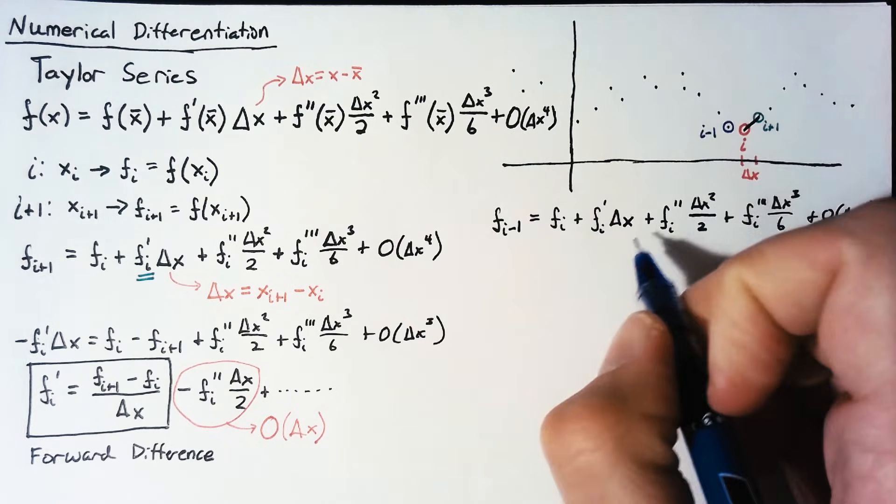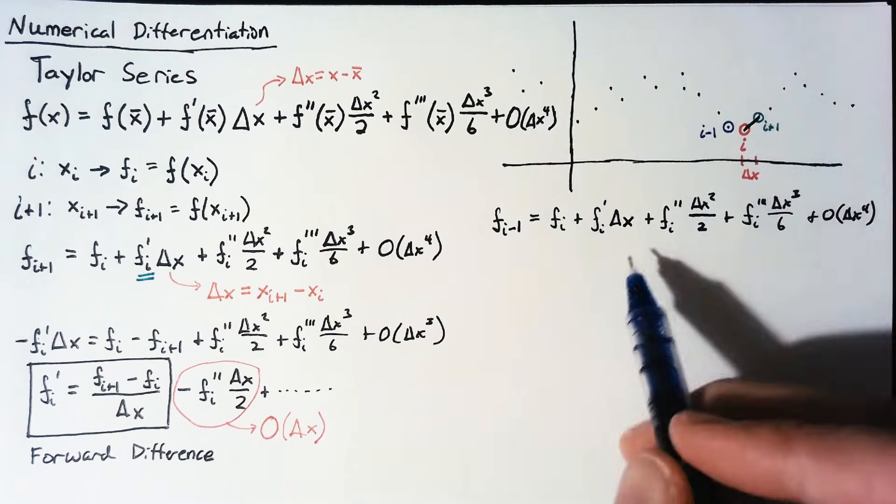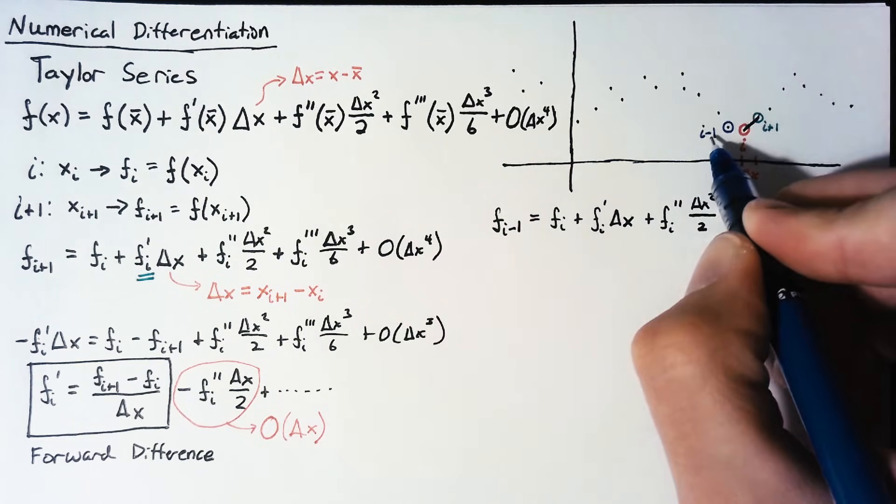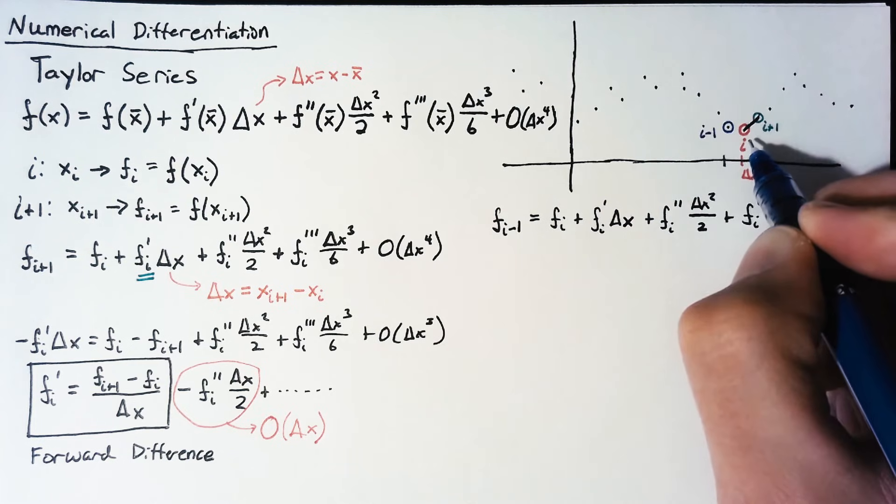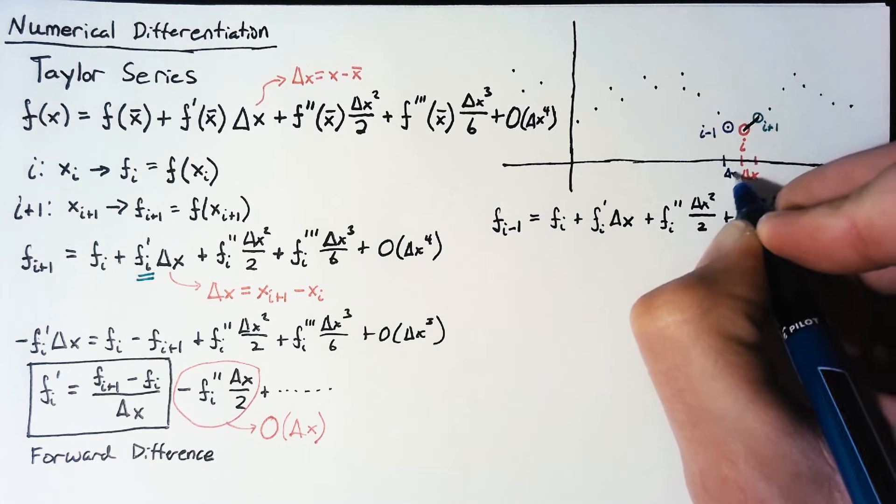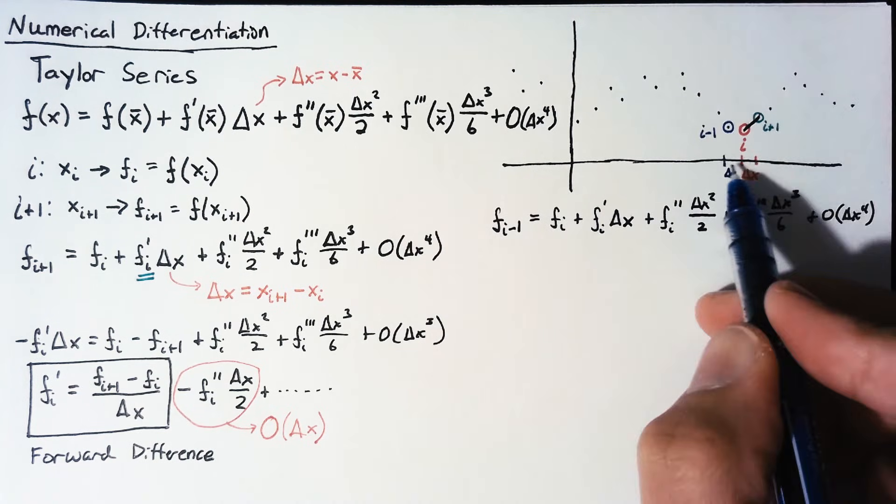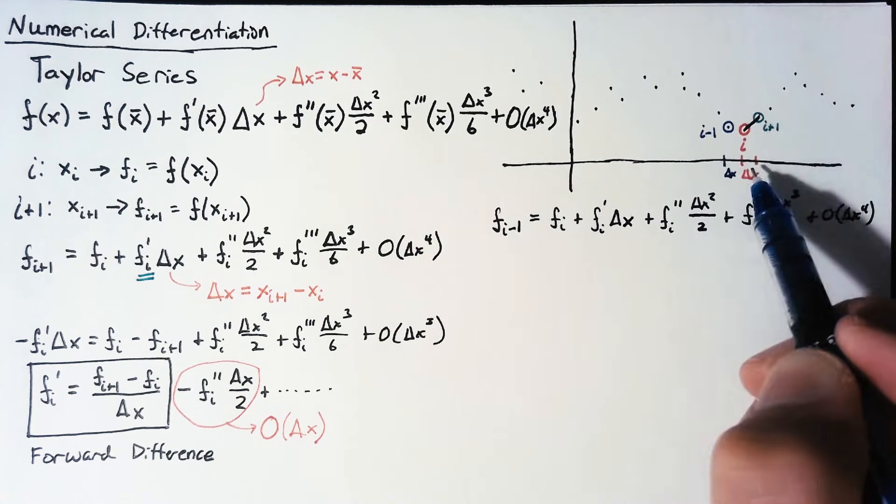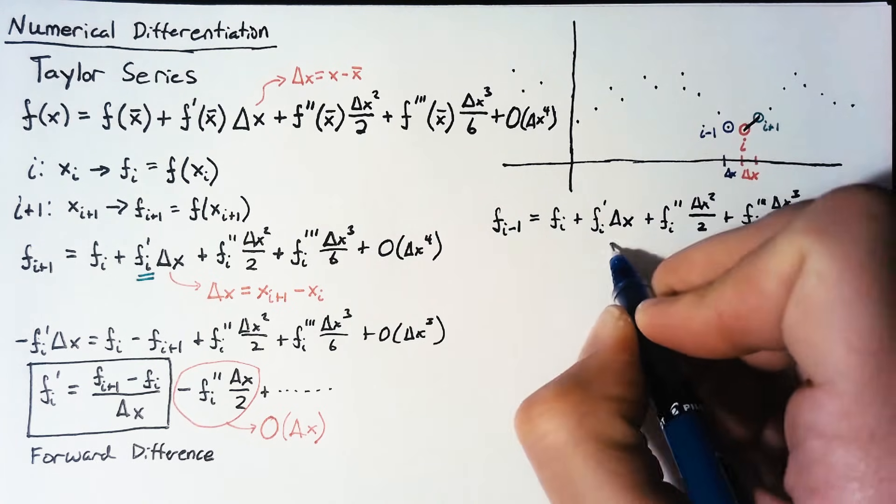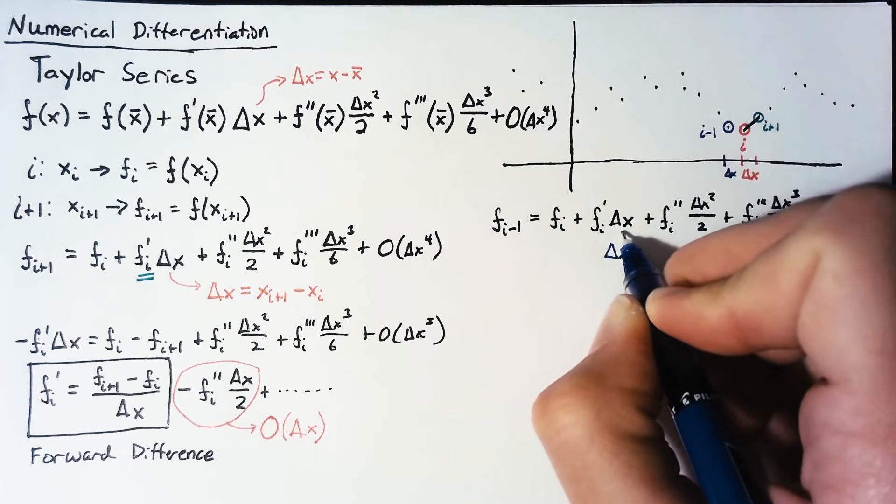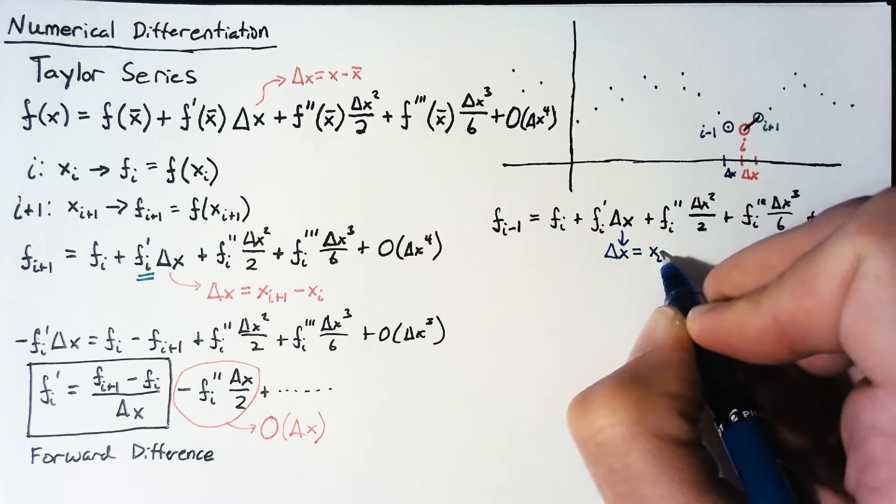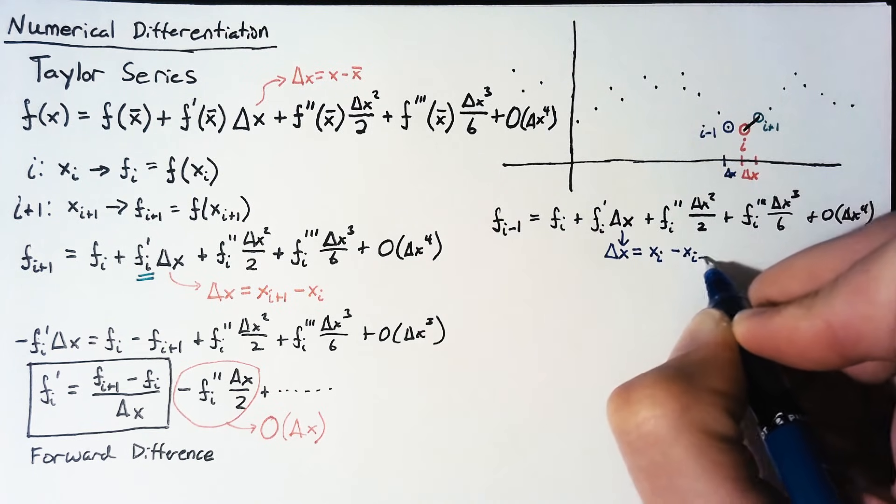Now, let's talk a little bit about what this delta x means. The way we have it written here, this is going to be xi minus 1 minus xi, but that's a little counterintuitive because we expect this delta x to be positive moving to the right. So, we're going to change the definition just a little bit. We're going to say that delta x here is going to be equal to xi minus xi minus 1.